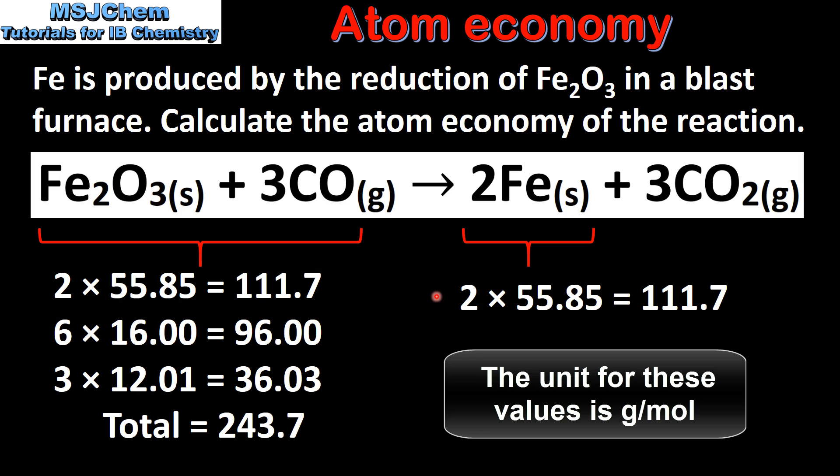Next we find the total of the molar masses of all the atoms in the desired product, which in this case is iron. That's 2 multiplied by the molar mass of iron, which is 55.85, and this gives us 111.7.